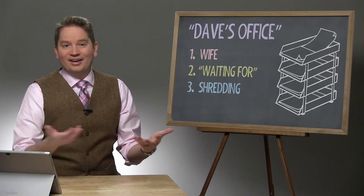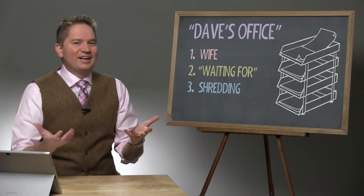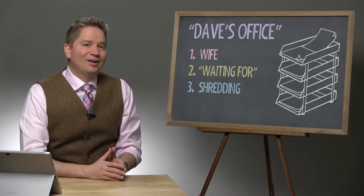The third tray, well, that's for shredding. So any sensitive document that I have, I put into that file and then later I give it to my son and pay him a couple of bucks to do all the shredding for me.